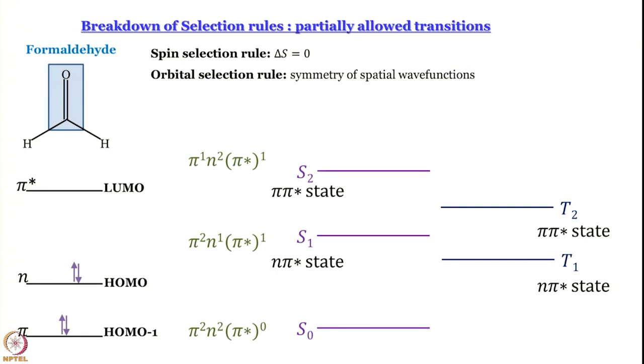The spin selection rule is ΔS = 0, which means that even if you give light matching the energy gap between S0 and T1, that transition is forbidden by the spin selection rule because ΔS would be +1, which is not allowed. Another selection rule for electronic spectroscopy is the orbital selection rule, sometimes called the symmetry selection rule. It arises from the symmetry of spatial wave functions and says that transitions can only take place between orbitals of compatible symmetries.